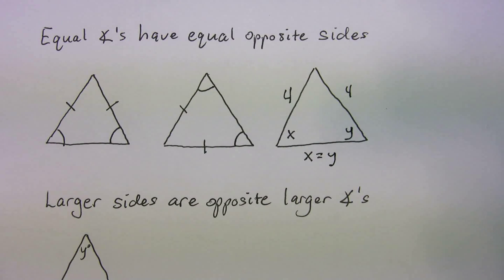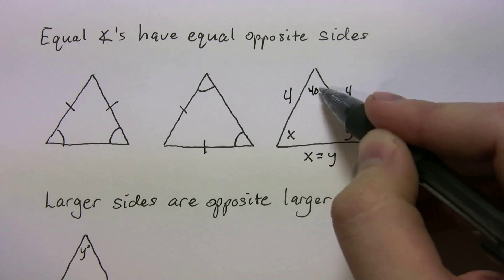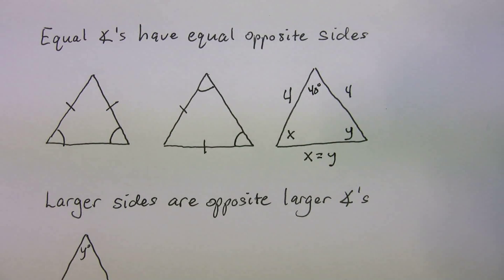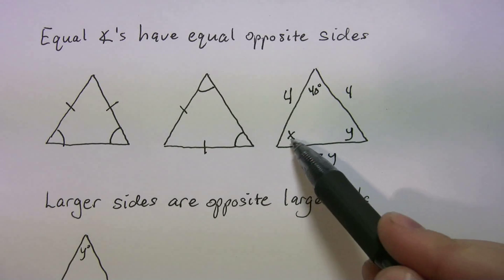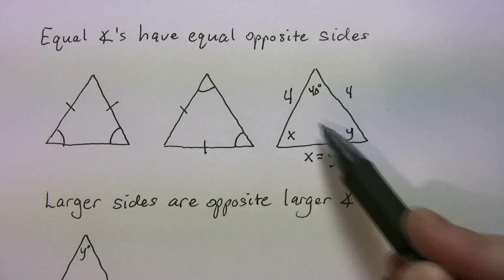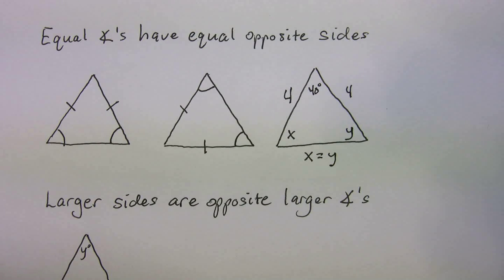You know what they might do? They might give you, they might tell you that this was like 40 degrees, and they'd ask you to find x. Well, you should just know that, since these are equal, because their opposite sides are equal. So, then you could solve for x or y, or whatever they would ask for on the test.